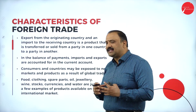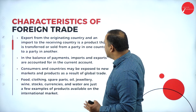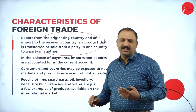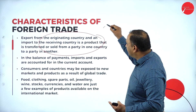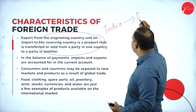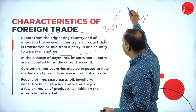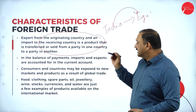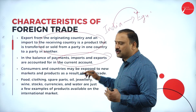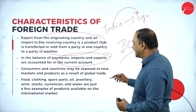The export originating from a country and import to the receiving country is the product that has been transferred or sold. For example, when India sells a product that is bought in Egypt, the product gets transferred from India to Egypt. The balance of payments is what we are very much concerned about on the current account, particularly the balance of trade.